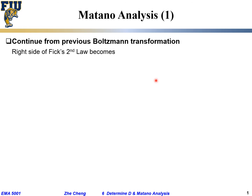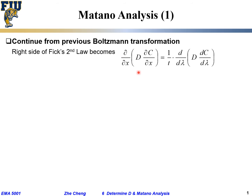The right side of Fick's Second Law is the partial differential of c with respect to x times d — that's our negative flux. Inside the bracket is our so-called negative flux: how fast does flux change with location?